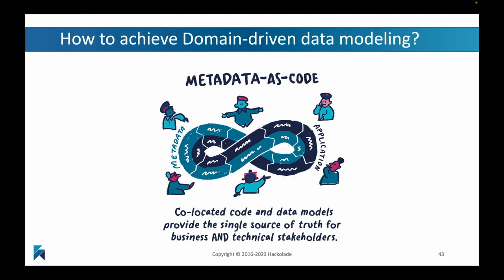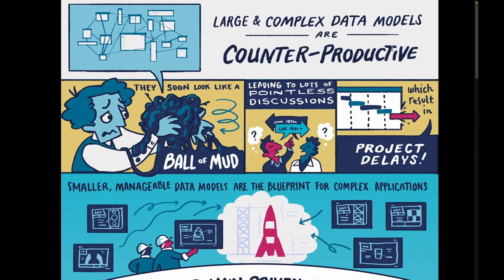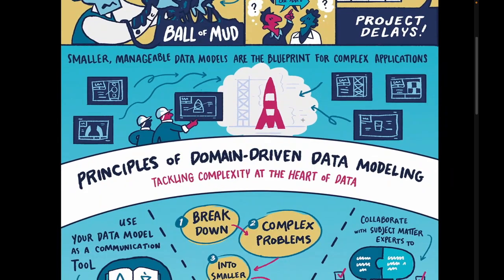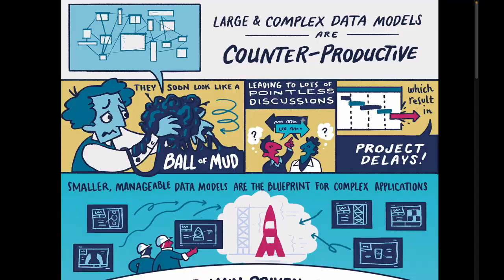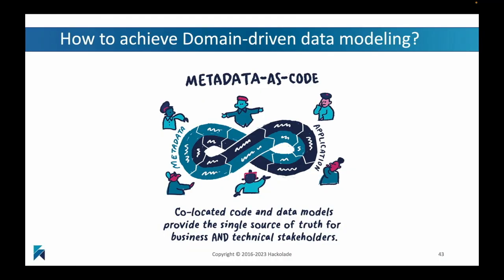And of course, metadata as code is going to co-locate the code and the data models so that there is a single source of truth for business and technical stakeholders, so that the subject matter experts and the data engineers are always looking at the same artifacts. This is how you achieve domain-driven data modeling. We've actually provided people with a really nice infographic, which we will obviously be sharing later on, and which you may recognize a little bit from our presentation here. So please take a look at that.